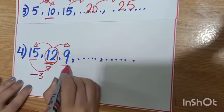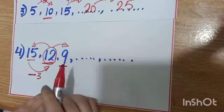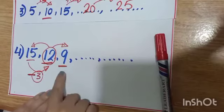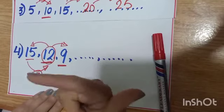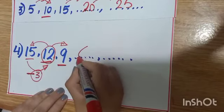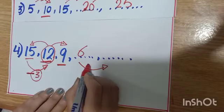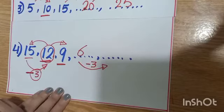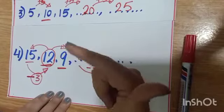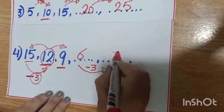I will start here from nine. I will subtract what? I will subtract three. Before nine: eight, seven, six. So I will write six. I will subtract three. Before six: five, four, three. So I will write three.